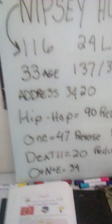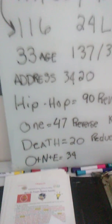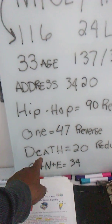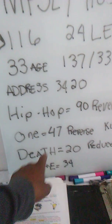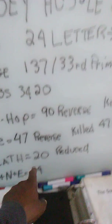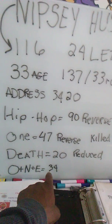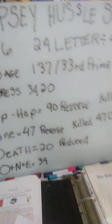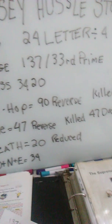If we look at the word 'death' and reduce it — D is single digit, E is single digit, A is single digit, but the 20 is double digit so it becomes a 2 — it reduces to 20. And 'one' in simple ordinal is 34. So 34 and 20 — 3420 — that's the address. This is information hitting in plain sight.